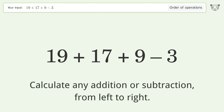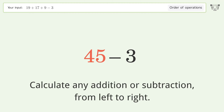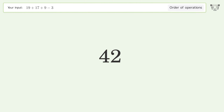Calculate any addition or subtraction from left to right: 19 plus 17 equals 36. 36 plus 9 equals 45. 45 minus 3 equals 42. And so the final result is 42.